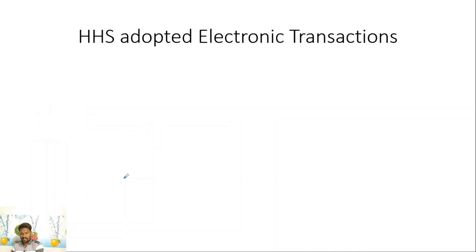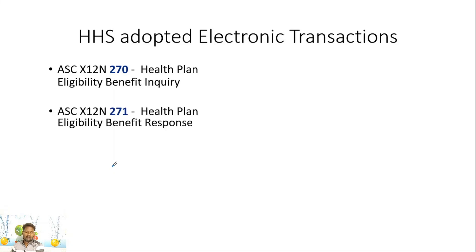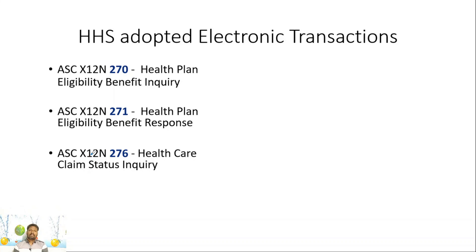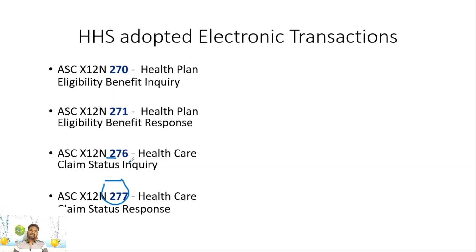Let's see a summary of other healthcare EDI transactions. 270 is the eligibility request sent to the health plan, and 271 is the response from the health plan. Next, 276 is the healthcare claim status inquiry, used to request claim status from the insurance plan. When insurance sends a response, the 277 format is used. Remember, 277 is only a claim status — it's not a remittance advice, just a claim status report. You may not have used 276 directly because these transactions typically happen between clearinghouses and insurance companies; providers utilize their clearinghouses for this purpose.